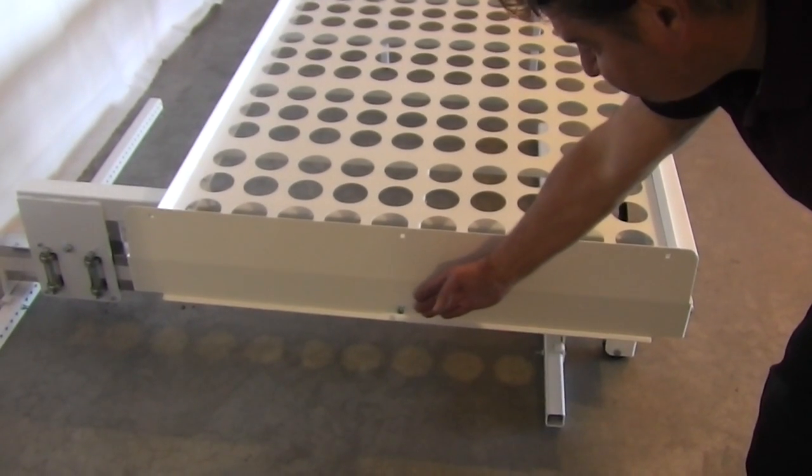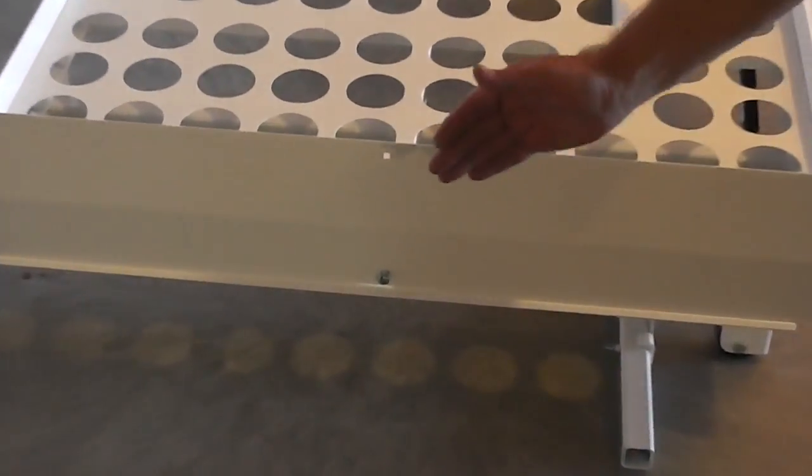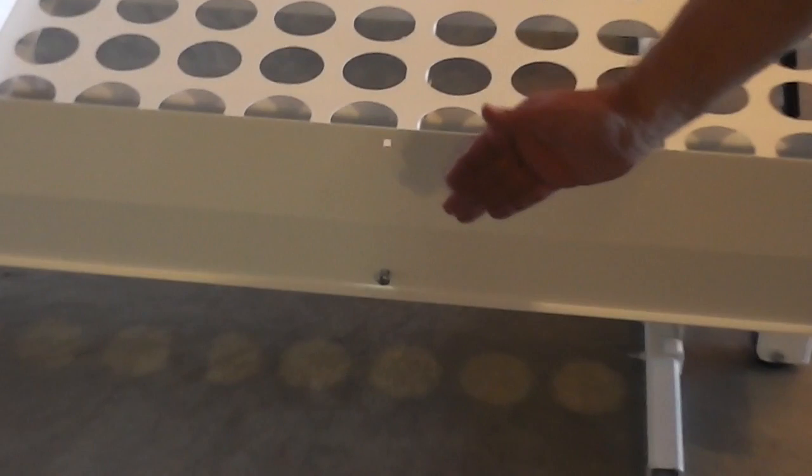Secure the mattress platform using the brown-headed Phillips screws to the bottom. On the twin, there will be one. On the queen, there will be three screws.